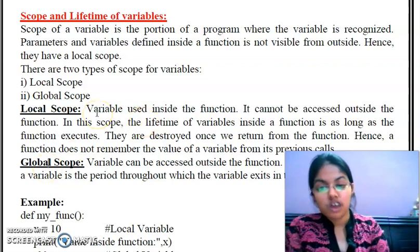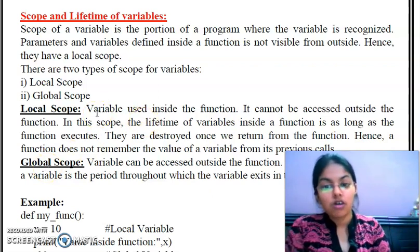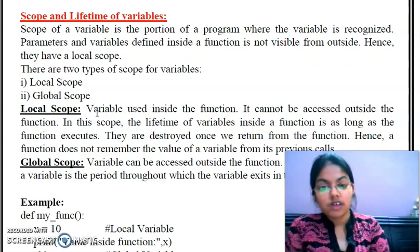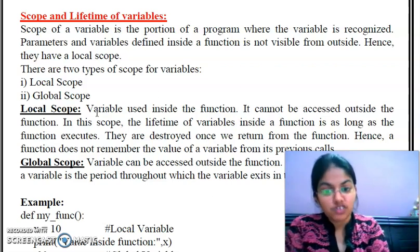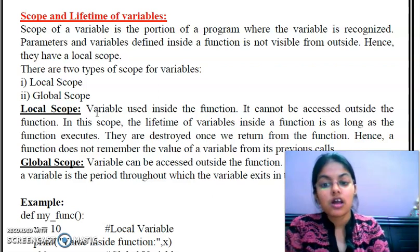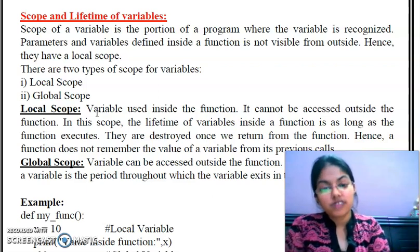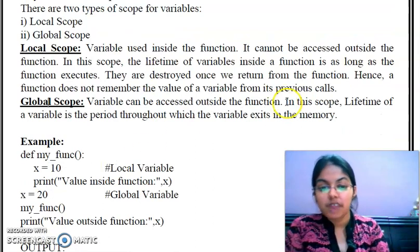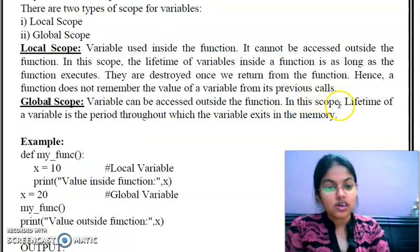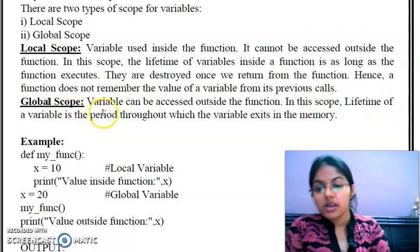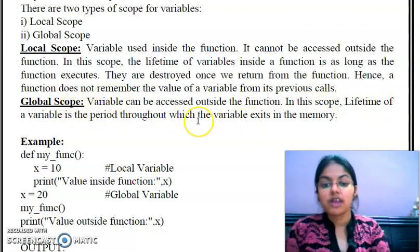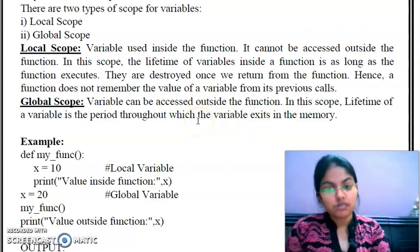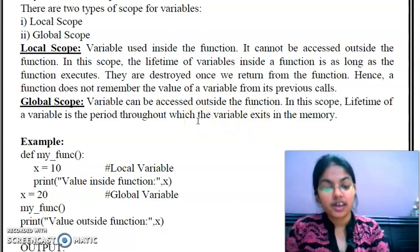Variables which are used inside a function are called local scope. For example, if we have defined a function and in that function I have created one variable, then that variable is in the local scope of that function and is not accessible outside that function. Next is global scope — variables which can be accessed outside the function. The lifetime of a variable is the period through which the variable exists in the memory, meaning for the whole program we can use and access that variable.